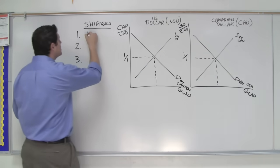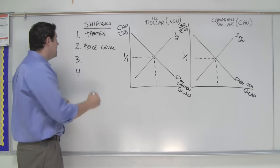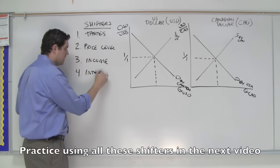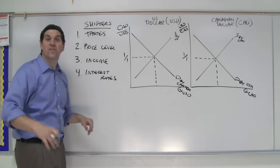The first one is tastes and preferences. Another one is price level or inflation. The next one is going to be income. The last one is interest rates. And that's what we're going to use for this example.